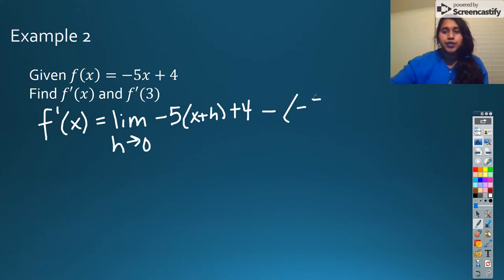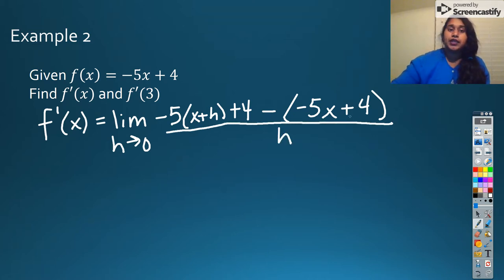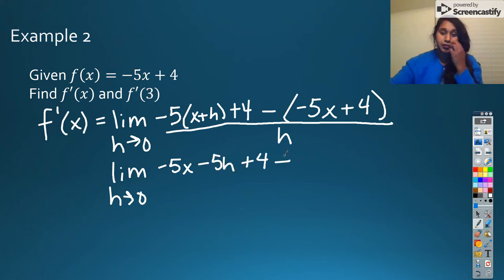Minus my original function. And again, now you can see why those parentheses are so darn important all over my h. Now I do what I can to remove those parentheses. I do my limit as h approaches 0 of negative 5x minus 5h plus 4, minus a negative or minus 2 negatives, let's make it a positive 5x minus 4 all over h.